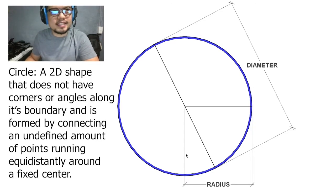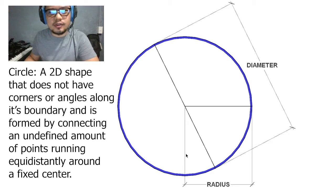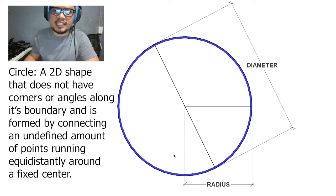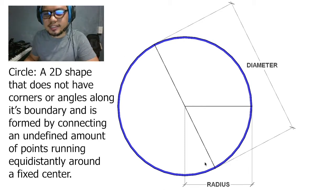Now what is a circle? A circle is a 2D shape that has no corners and no angles along its boundary, and it's formed when we connect an infinite amount of points that are all equidistant to a central point.